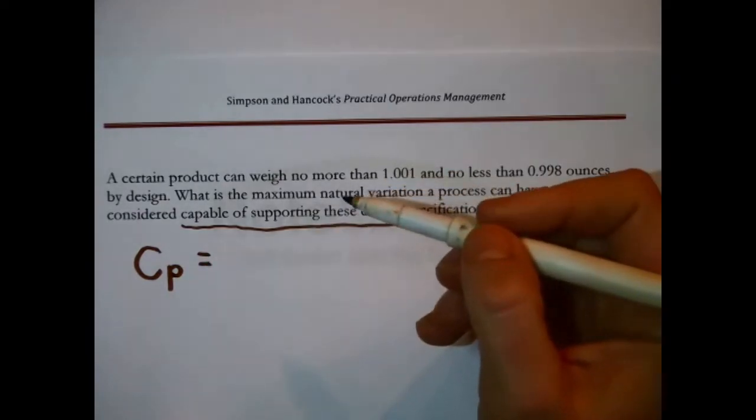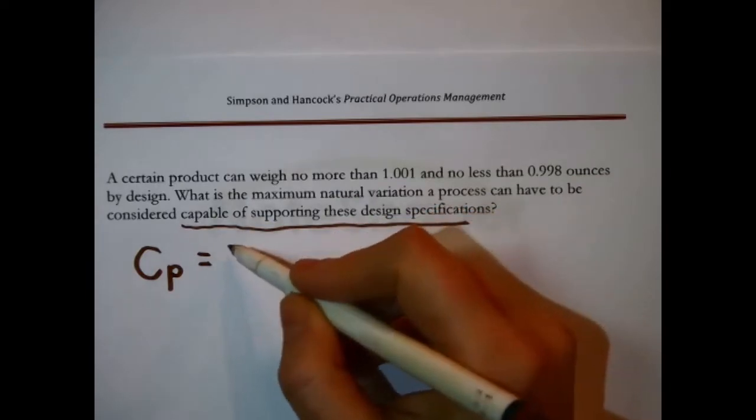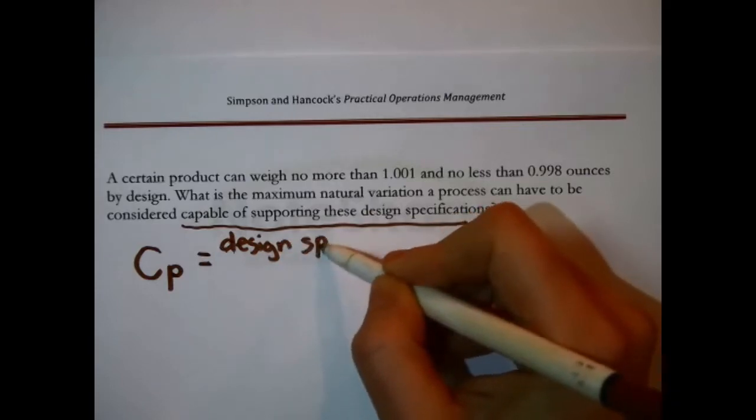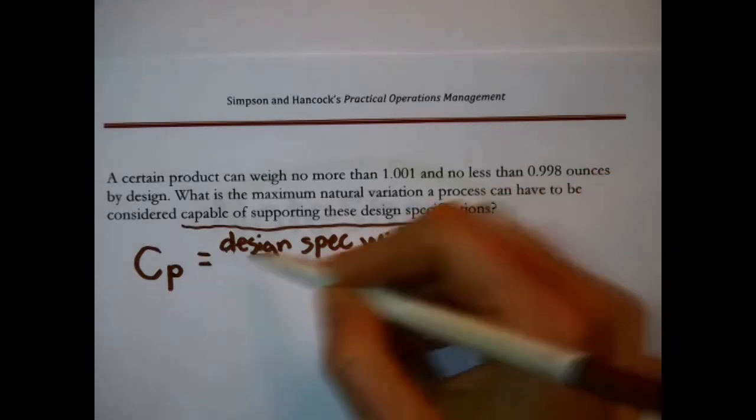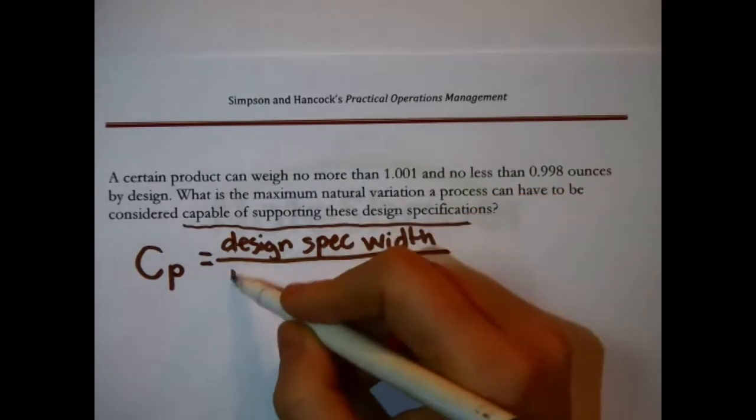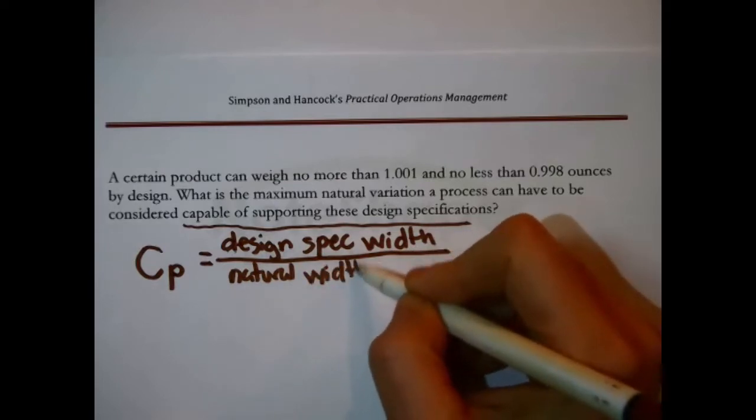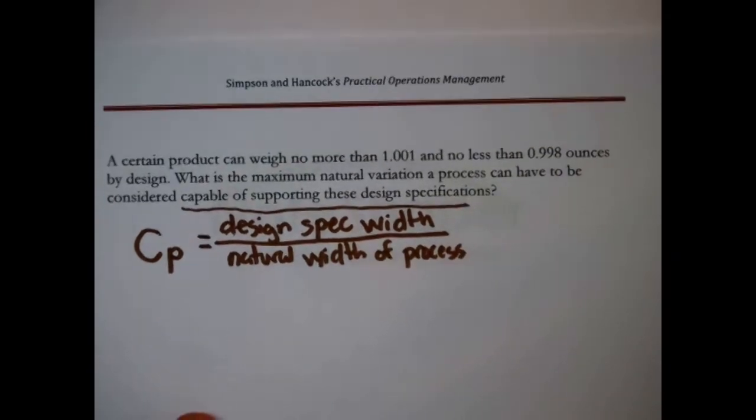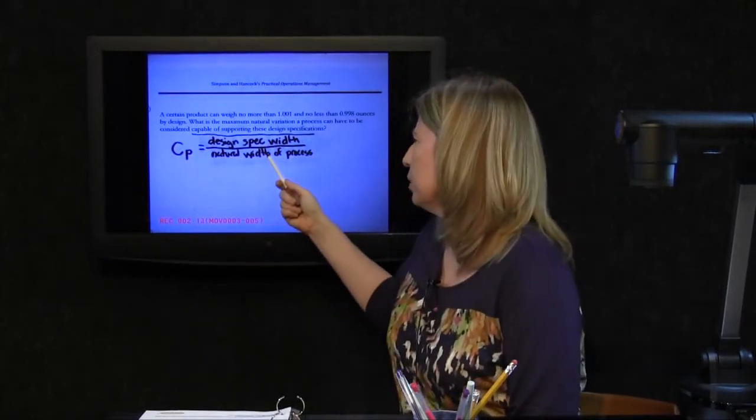Now first off, what's the formula for it? The process capability index is a ratio in essence. In the numerator is the design specification width, what by design you can tolerate, and in the denominator is the natural width of the process. Now that's one form of the formula, but actually we can be more specific.